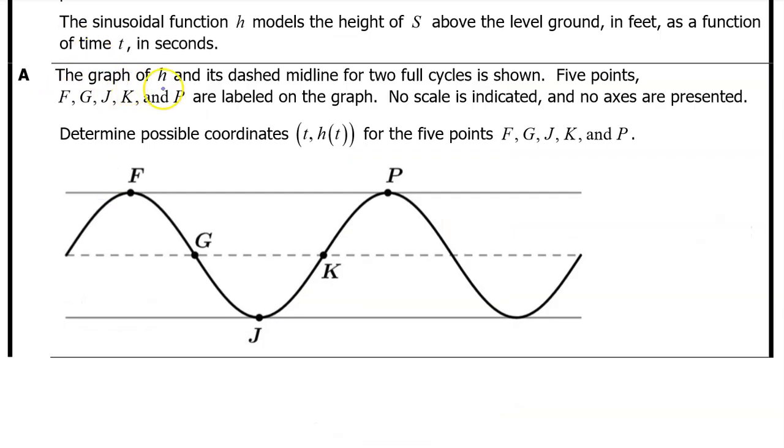Part A. The graph of H and its dashed midline for two full cycles is shown. Five points, F, G, J, K, and P are labeled on the graph. No scale is indicated and no axes are presented. Determine possible coordinates for the five points F, G, J, K, and P.